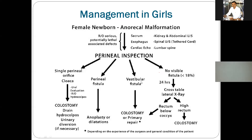Vestibular fistula: the rectum is communicating just behind the vaginal opening at the vestibular region. This is also a complex defect and not easily managed through a single procedure. Sometimes we advise a single procedure — new techniques have come out, such as transfistular anorectoplasty and other single-stage procedures — but routinely we advise the stoma and after that the primary repair.